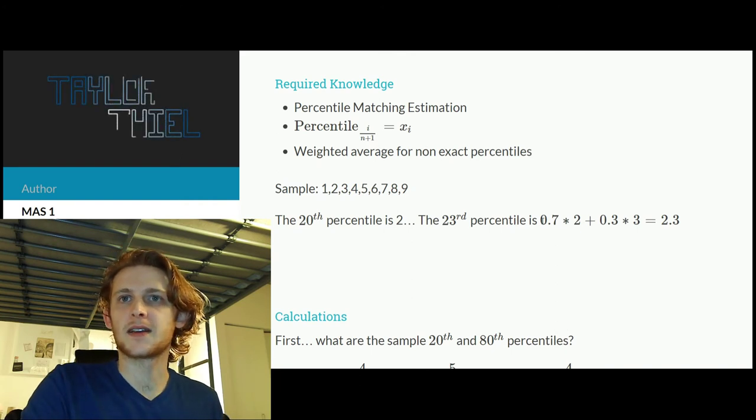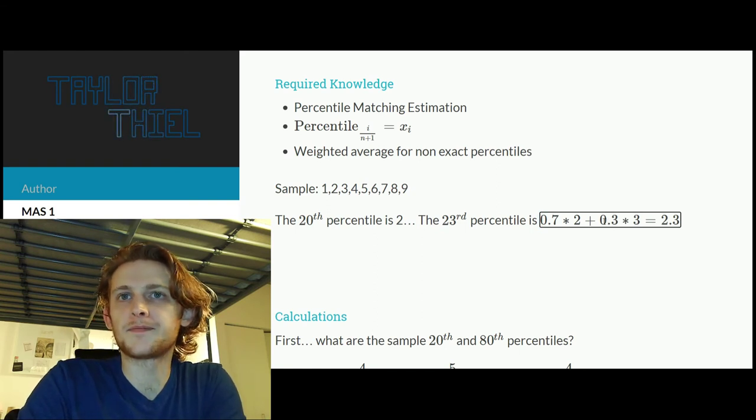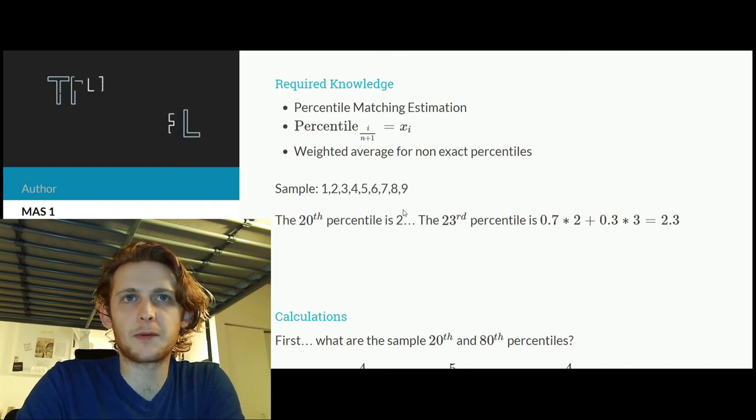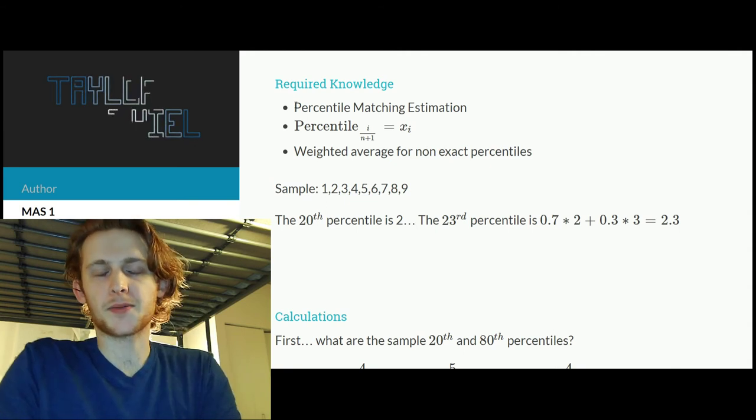And then what you're doing is you're just assuming that there's a uniform distribution between those ranks, which is a simplifying assumption. That's how you end up with these constants of 0.7 and 0.3 that sum to 1. So at this point I think we have everything we need to know, minus the bullet point of just looking up the corresponding distribution for this problem.